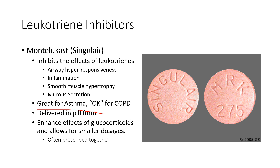They're delivered typically in pill form, and they may also enhance the effects of glucocorticoids. You might see this given in patients with asthma — a glucocorticoid along with a leukotriene inhibitor — because they have these enhancing effects. You may often see these prescribed together for chronic use.